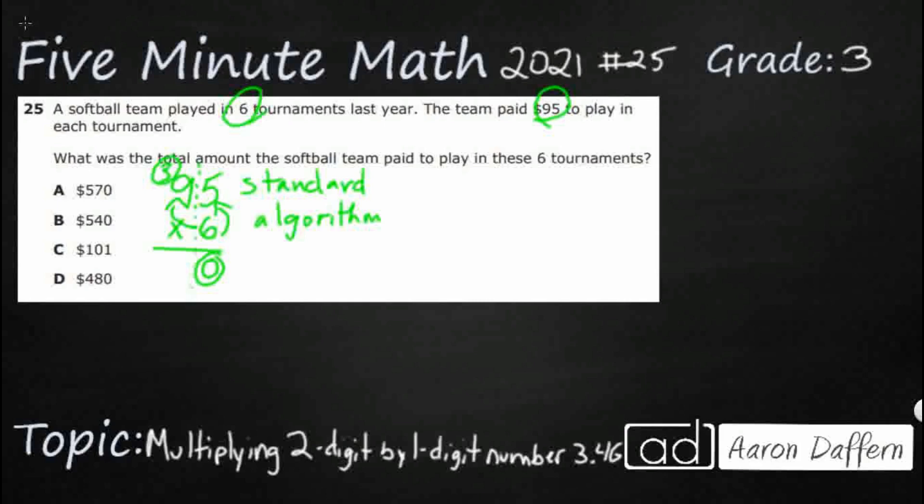But we have this 3 left. So we've got 54. We need to add that 3 because remember we had those 3 tens from that original 30. So we need to add that back in.